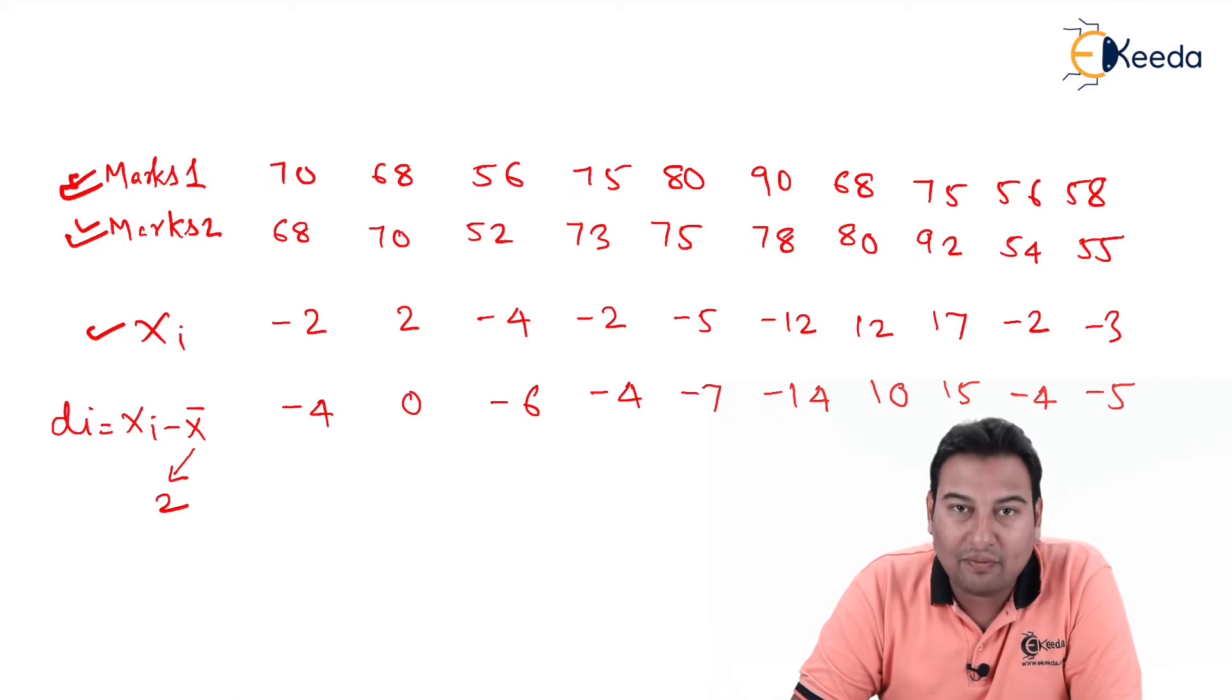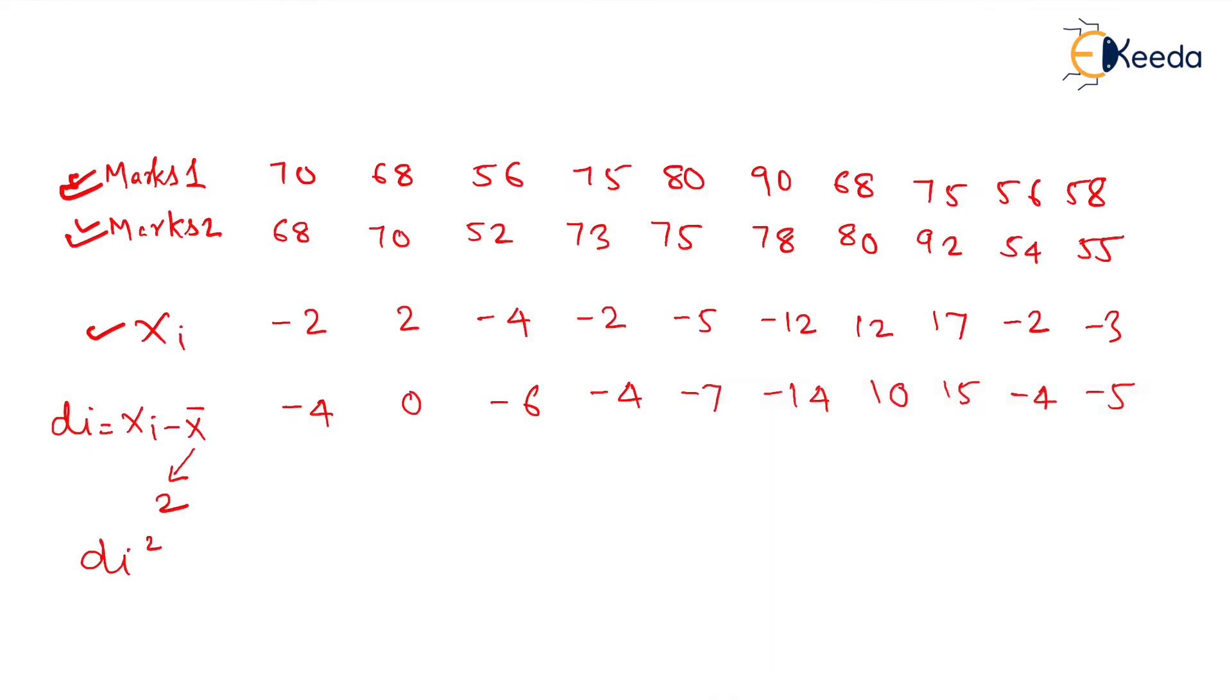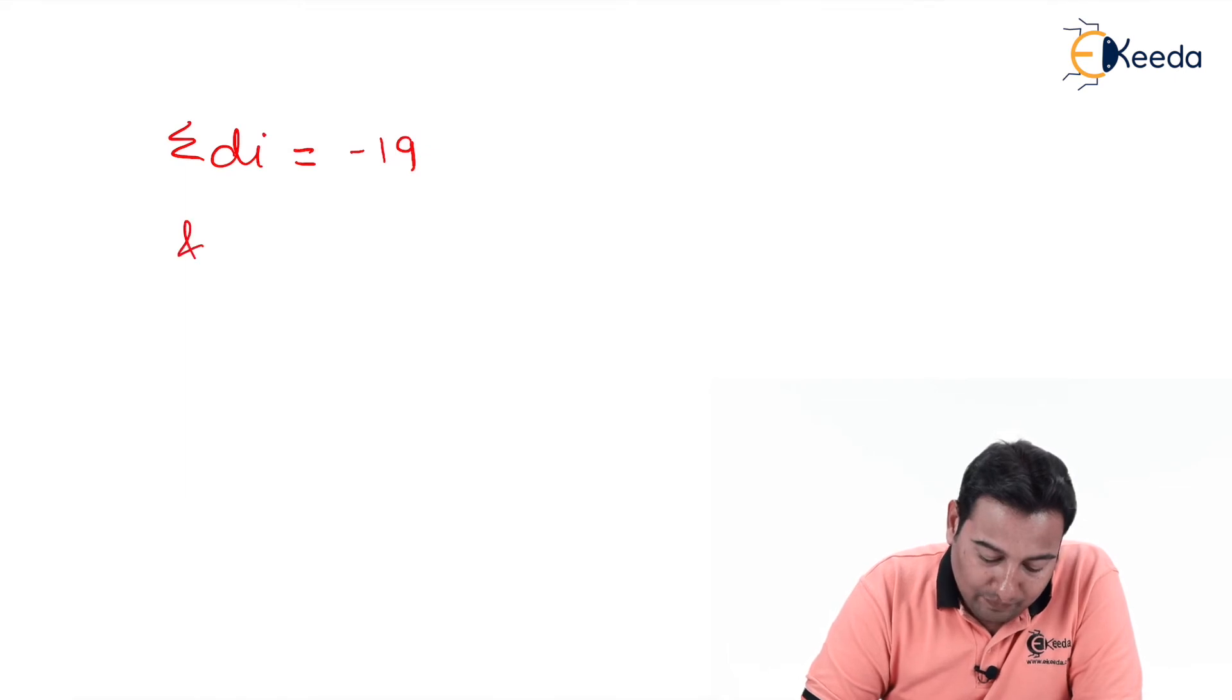This is the value of di that we got. Let us find di square. Minus 4 square is 16, 0 is 0, minus 6 square is 36, minus 4 square is 16, minus 7 square is 49, minus 14 square is 196, 10 square is 100, 10 square is 100, 15 square is 225, minus 2 square is 16, and minus 5 square is 25. Next is to get summation di and summation di square. After adding, summation di is minus 19 and summation di square is 679.